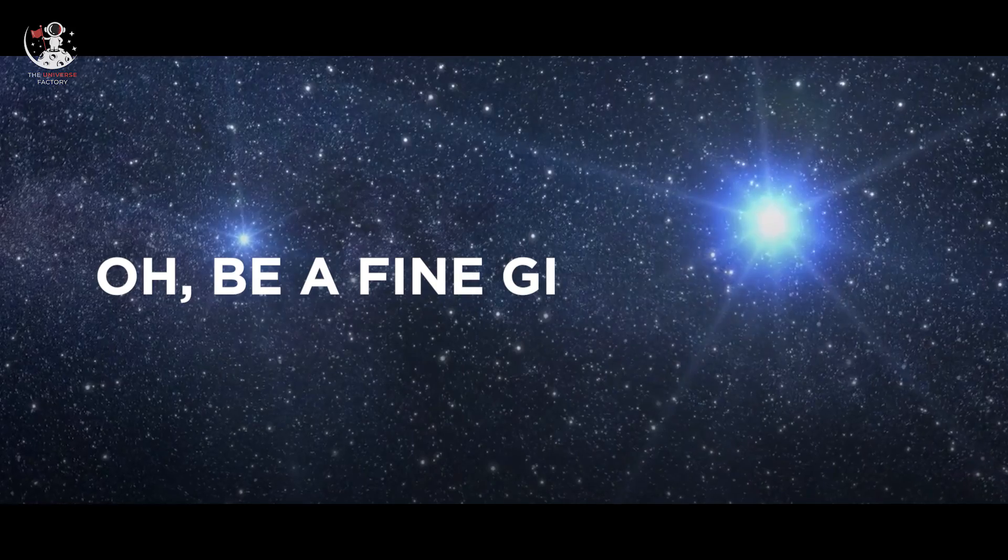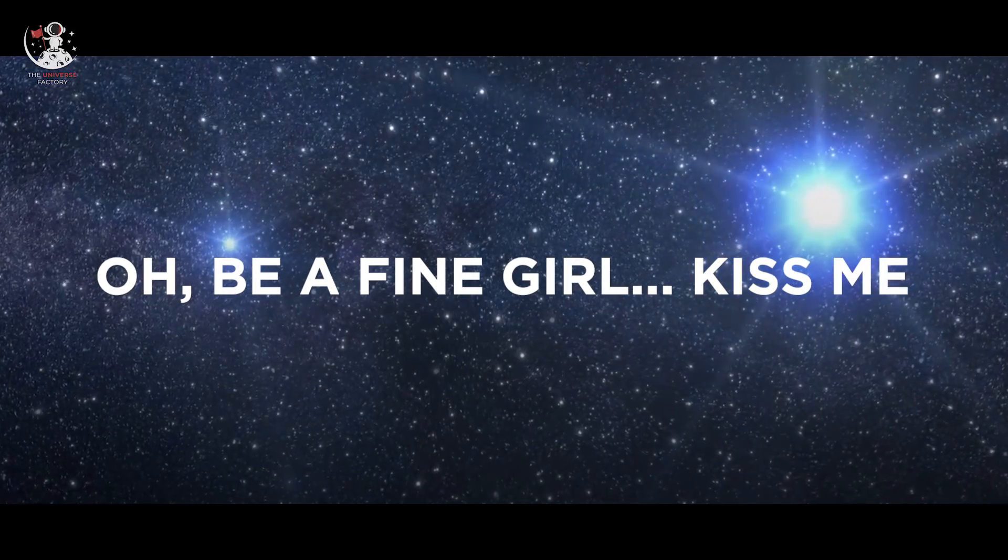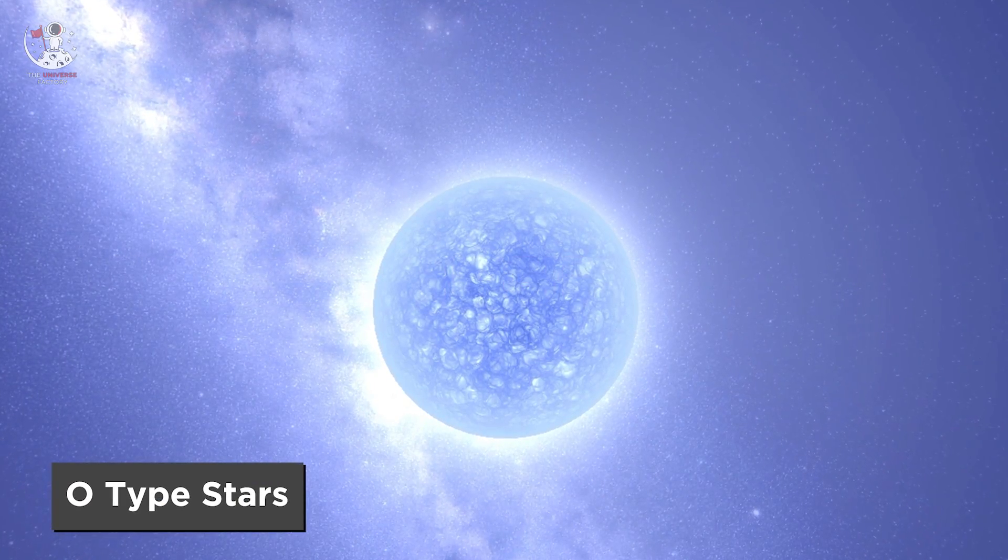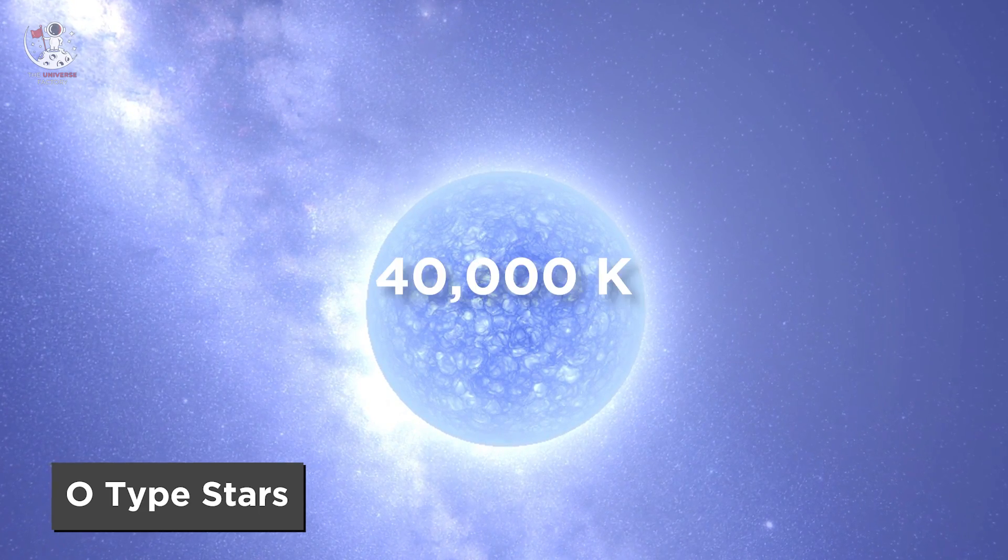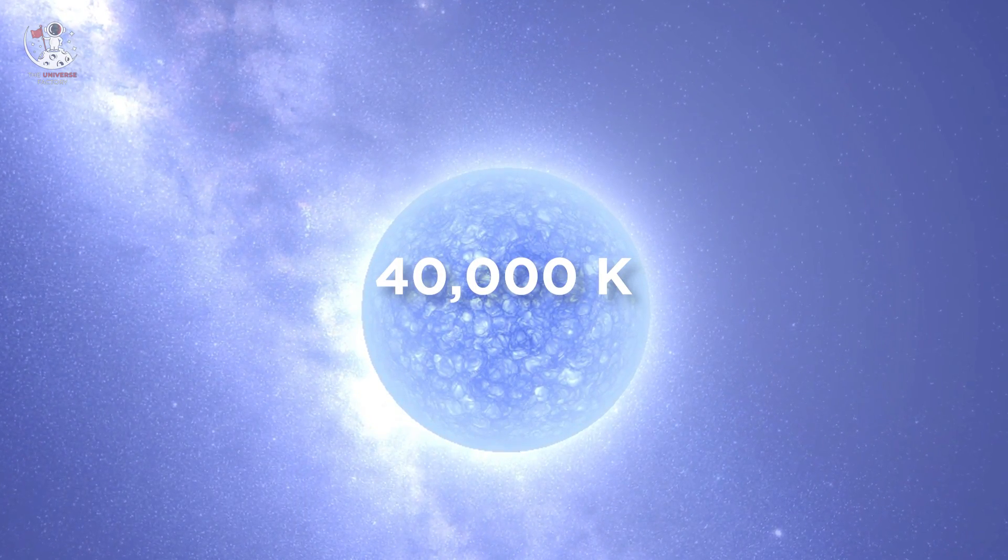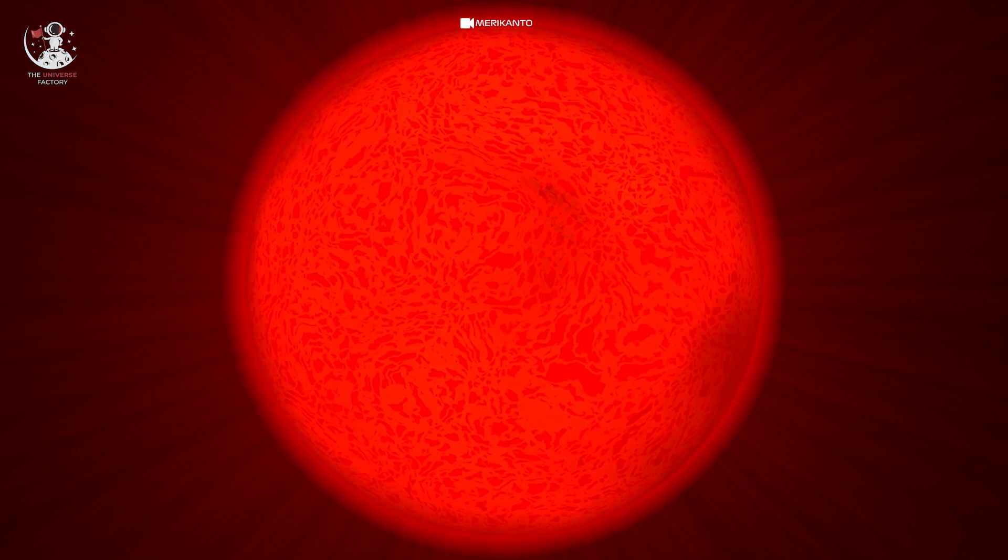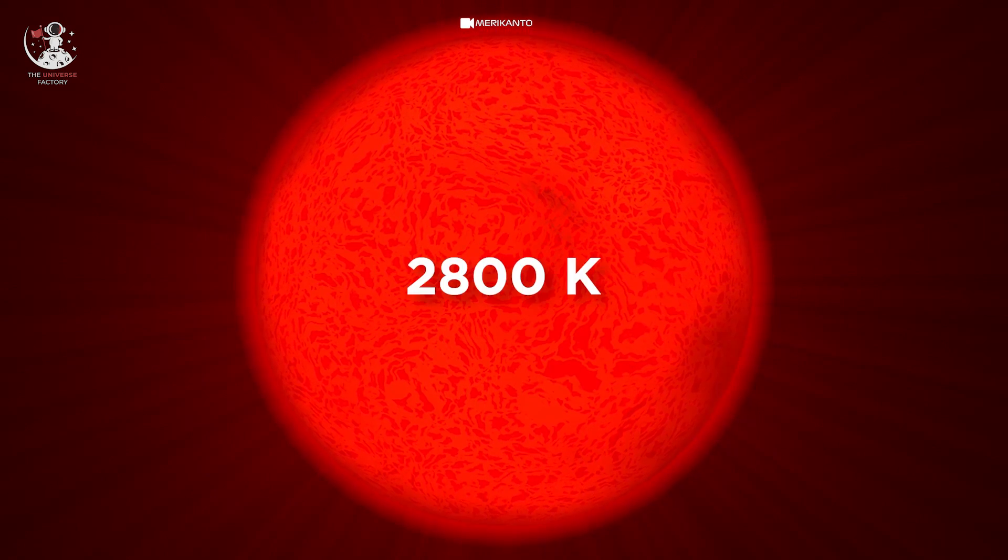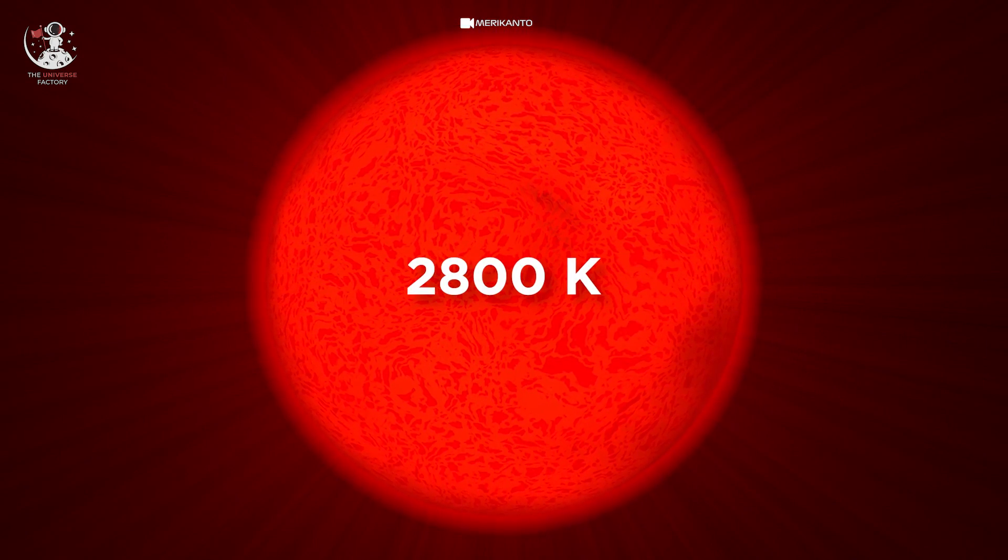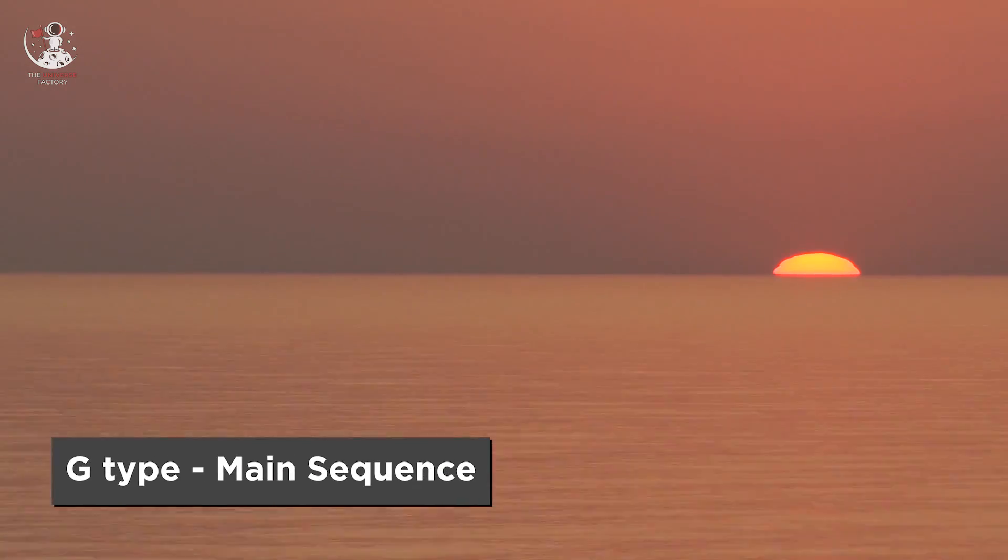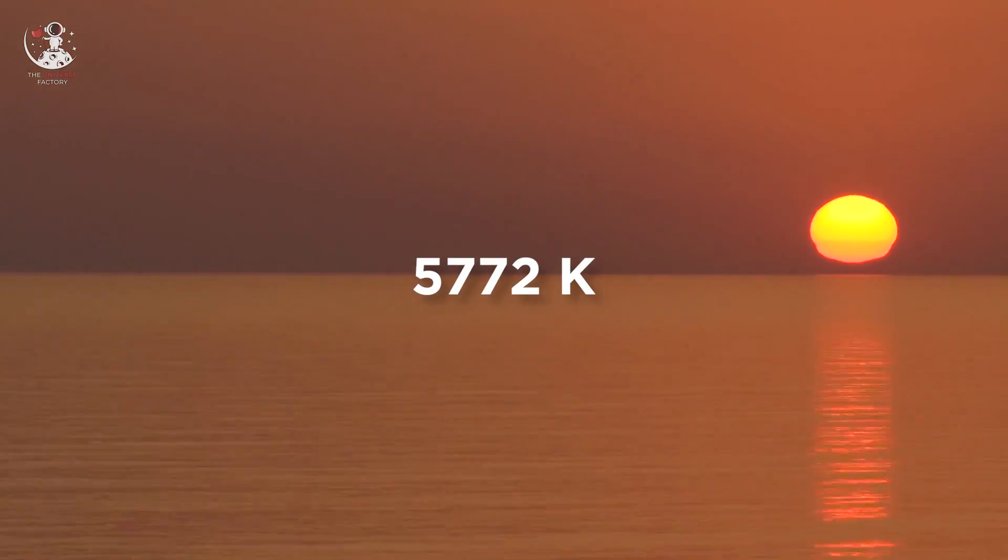Or simply remember, O be a fine girl, kiss me. With this logic, O-type stars have highest surface temperature with up to 40,000 Kelvin, whereas M-type stars have lowest surface temperature up to 2,800 Kelvin. Our sun is a G-type main sequence star with surface temperature around 5,772 Kelvin.